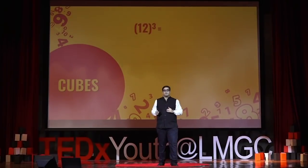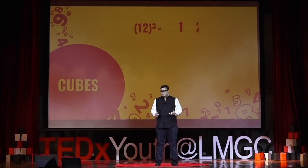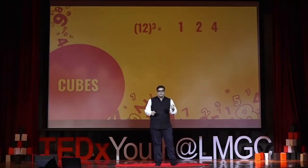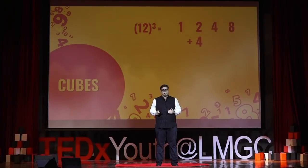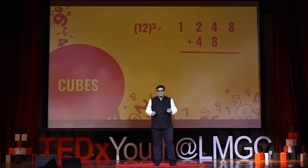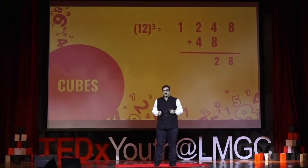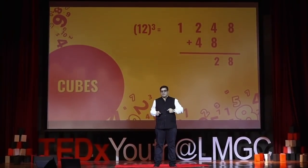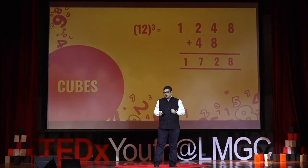Let's try 12³ together. a = 1, b = 2. 1³ = 1. Multiply by B/a = 2: gives 2. Again × 2: gives 4. Again × 2: gives 8. Now double the middle digits: 2 doubles to 4, and 4 doubles to 8. Add: units = 8, next: 4 + 8 = 12 so 2 down, 1 carry; then 2 + 4 + 1 = 7; finally 1. Answer: 1728.